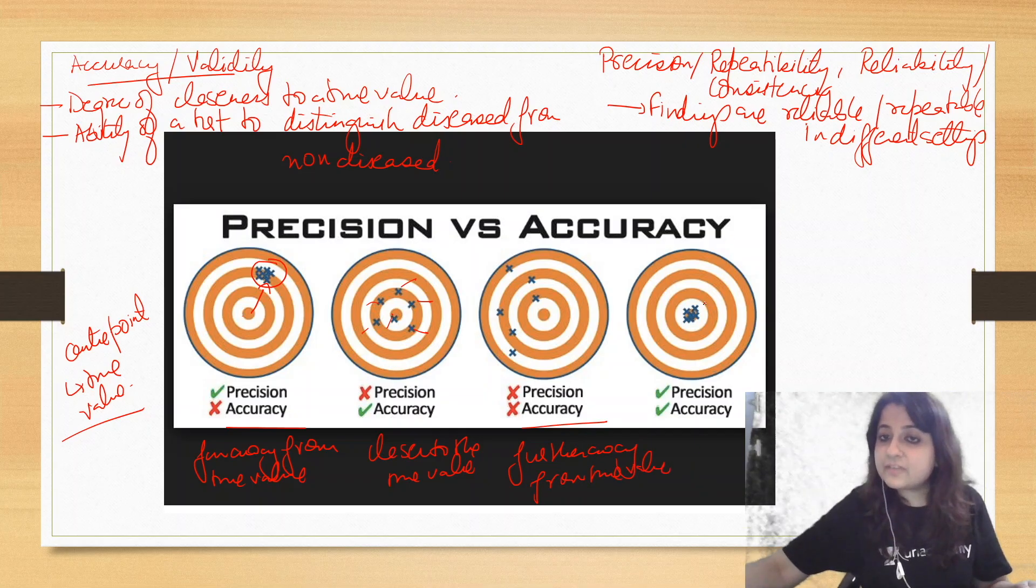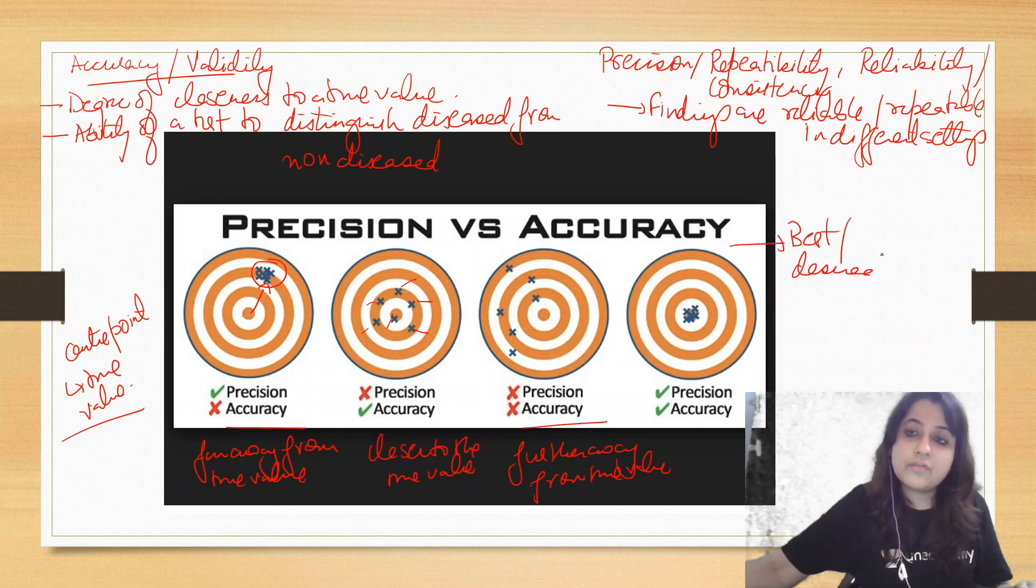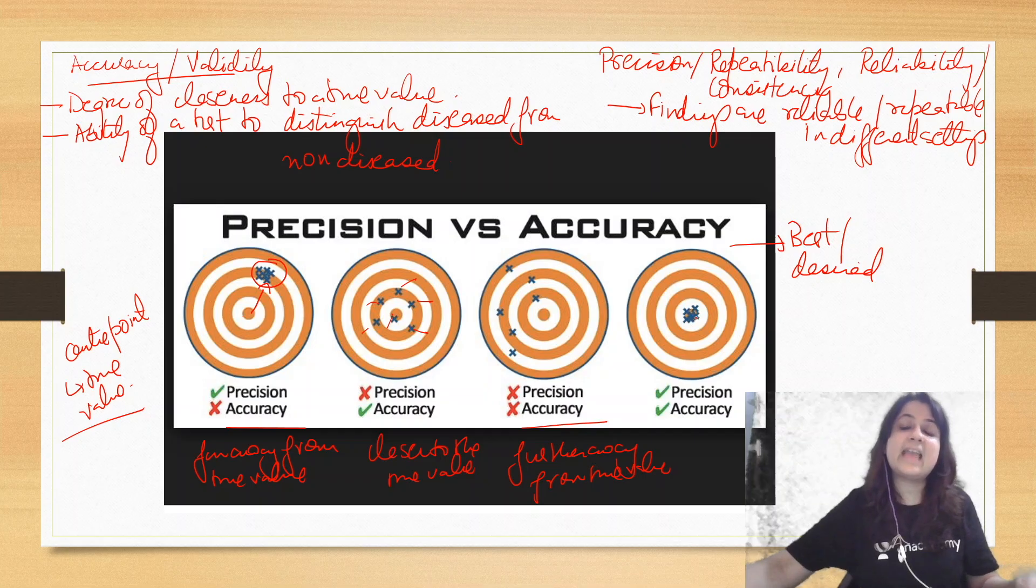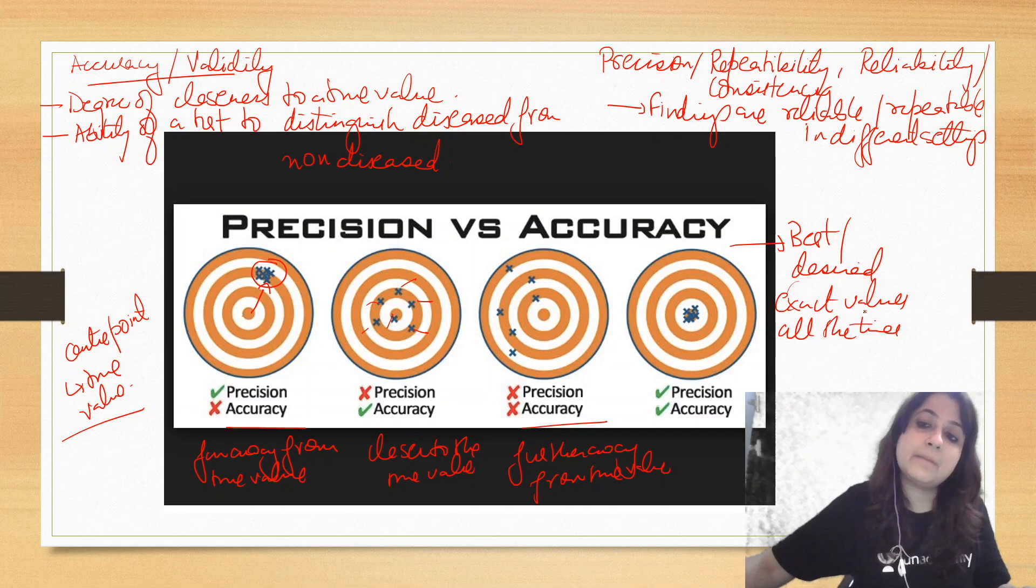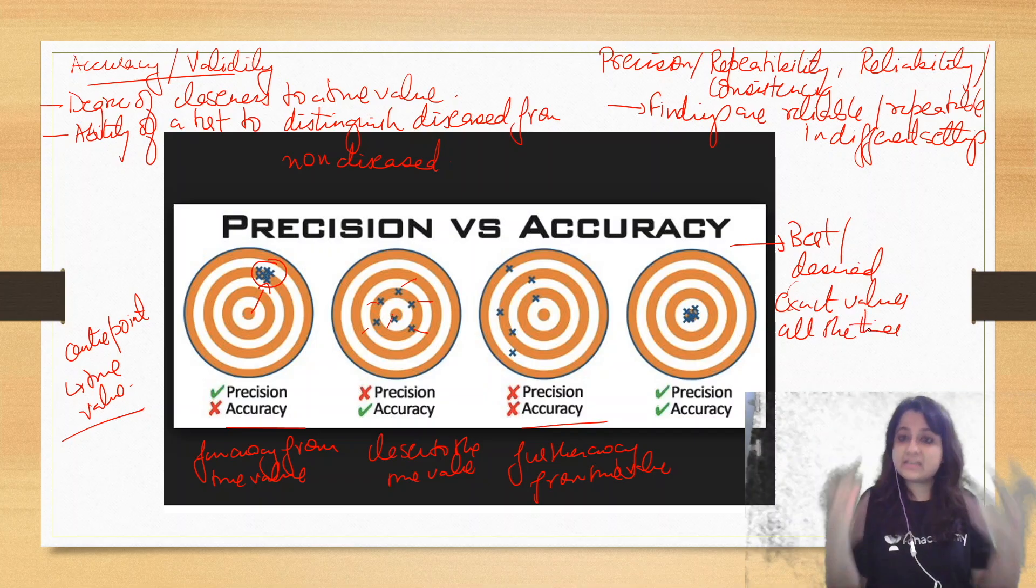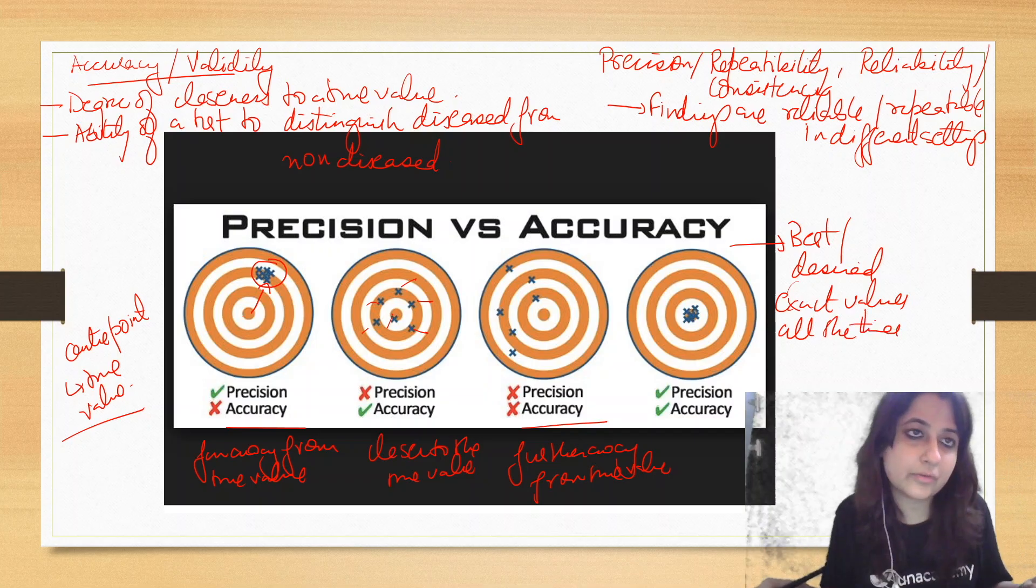If you look at the fourth image, which is actually the best or the desired image. Over here, what do we see? We see that every time my dart is hitting at the exact value. We get exact value all the time, all the time. So my findings are both repeatable as well as precise, as well as accurate.